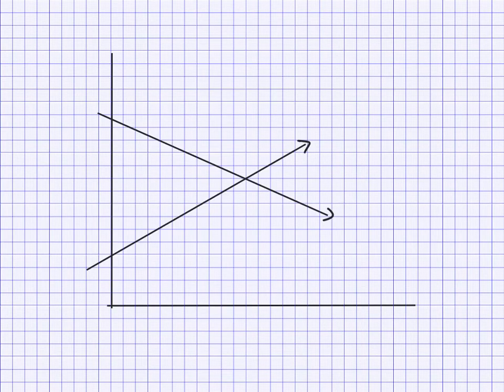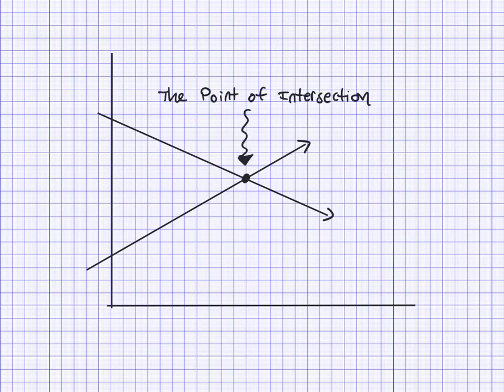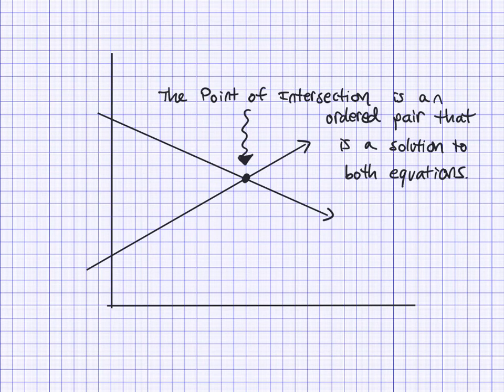So let's just wrap up really quick what we know about intersecting linear equations. Well first of all the point where they cross is called the point of intersection. There it is, here's our point of intersection and the point of intersection is a point that is a solution to both equations. Both of these lines go through this point and that is what makes it a solution to both of the equations that these lines represent. Pretty cool, huh?